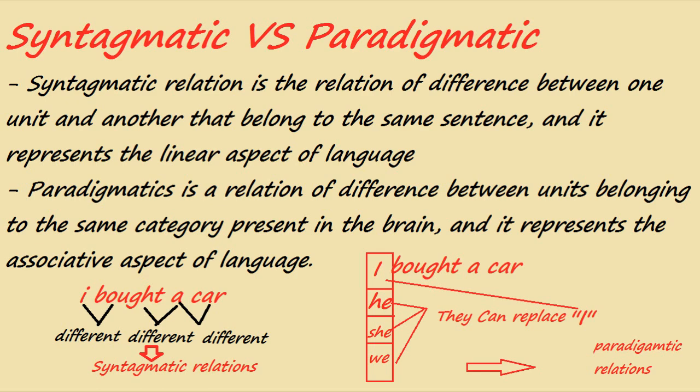The fourth dichotomy is syntagmatic and paradigmatic relations. For example: 'I bought a car.' Syntagmatic relations are the relations of difference between one unit and another belonging to the same sentence. In 'I bought a car,' there is a relationship between the subject 'I,' the predicate 'bought,' the article, and the object 'car.' There is a specific relationship between these units in the sentence, and this relationship is called the syntagmatic relationship. It represents the linear aspect of language.